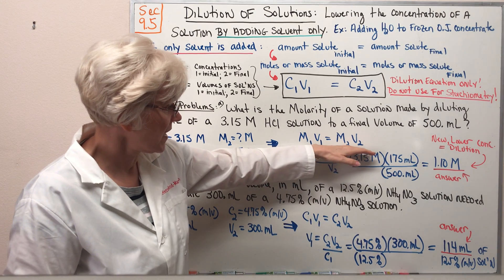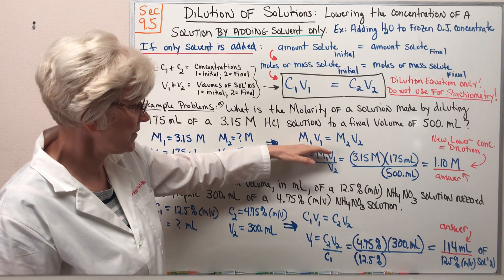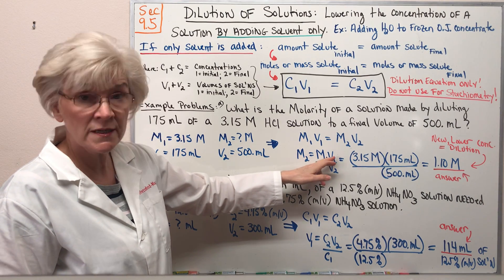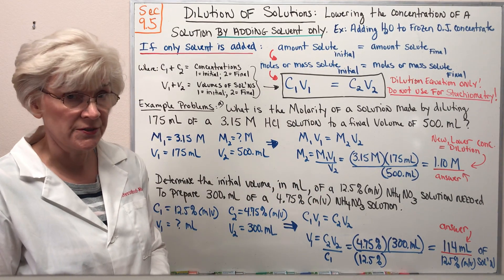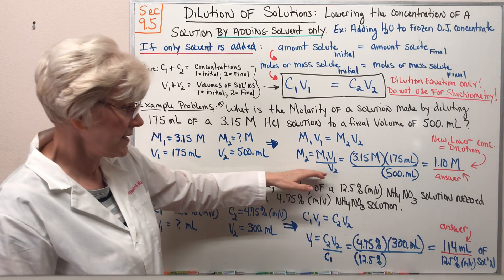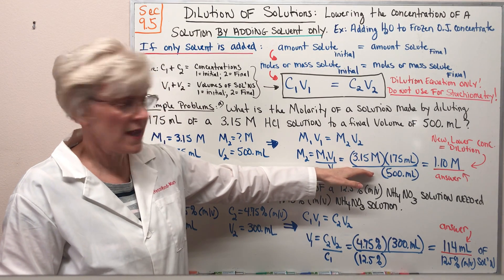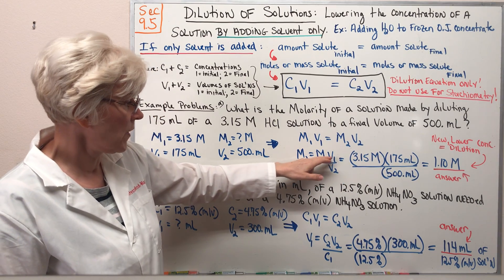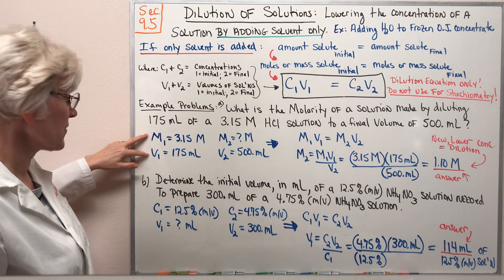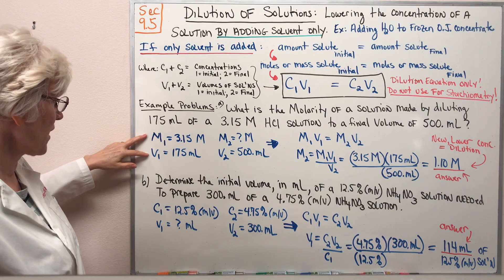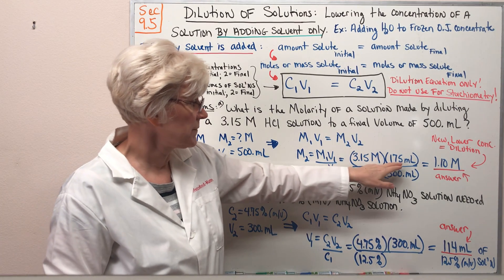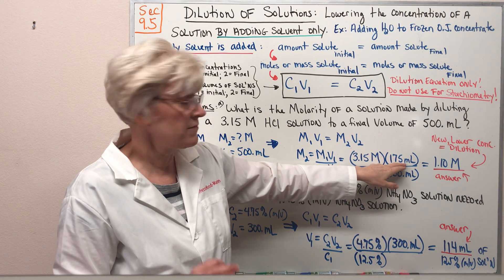Very easy algebra. Just divide both sides of the equation by V2 and we get M2 equals M1V1 divided by V2. At this point it's just a simple plug and chug calculation where we're plugging in for M1V1 the values of the initial molarity and initial volume: 3.15 M and 175 mL.